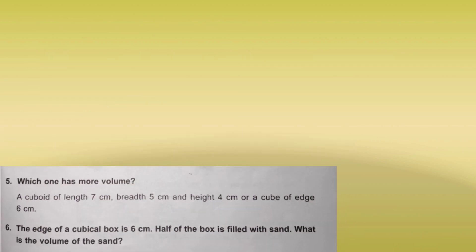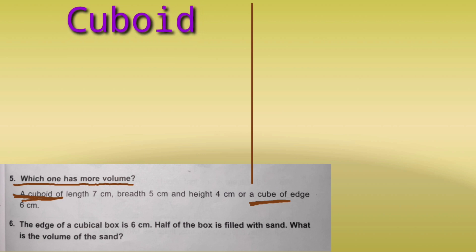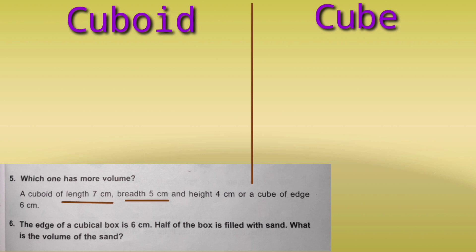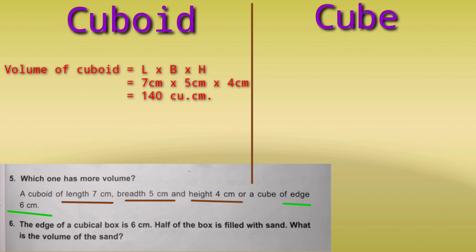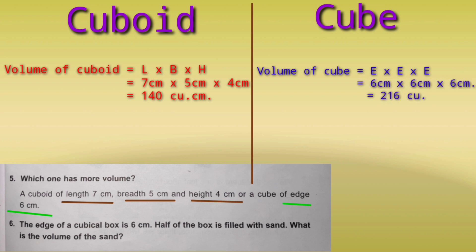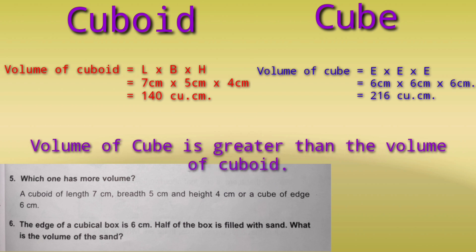Question 5: which of the following has more volume? We have a cuboid with length 7, breadth 5, and height 4 cm, and a cube with edge 6 cm. Cuboid volume = 7 x 5 x 4 = 140 cubic centimeters. Cube volume = 6 x 6 x 6 = 216 cubic centimeters. So the cube has more volume.